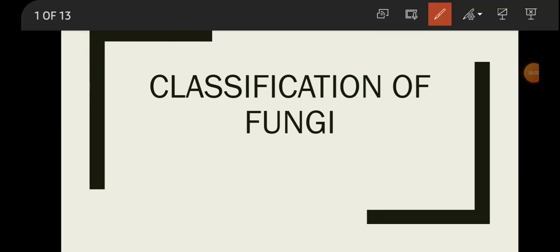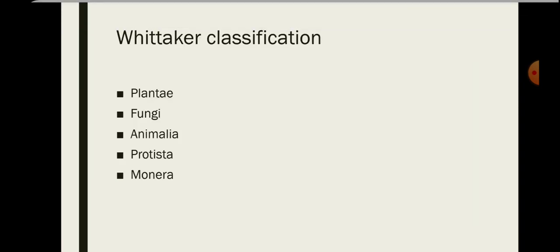Hello friends, in the previous video we studied about the general characteristics of fungi. In this video we will be covering another topic of unit one: classification of fungi. First, we will study the Whittaker classification, which is also known as the five kingdom classification. He divided all organisms on earth into five kingdoms: Plantae, Fungi, Animalia, Protista, and Monera.